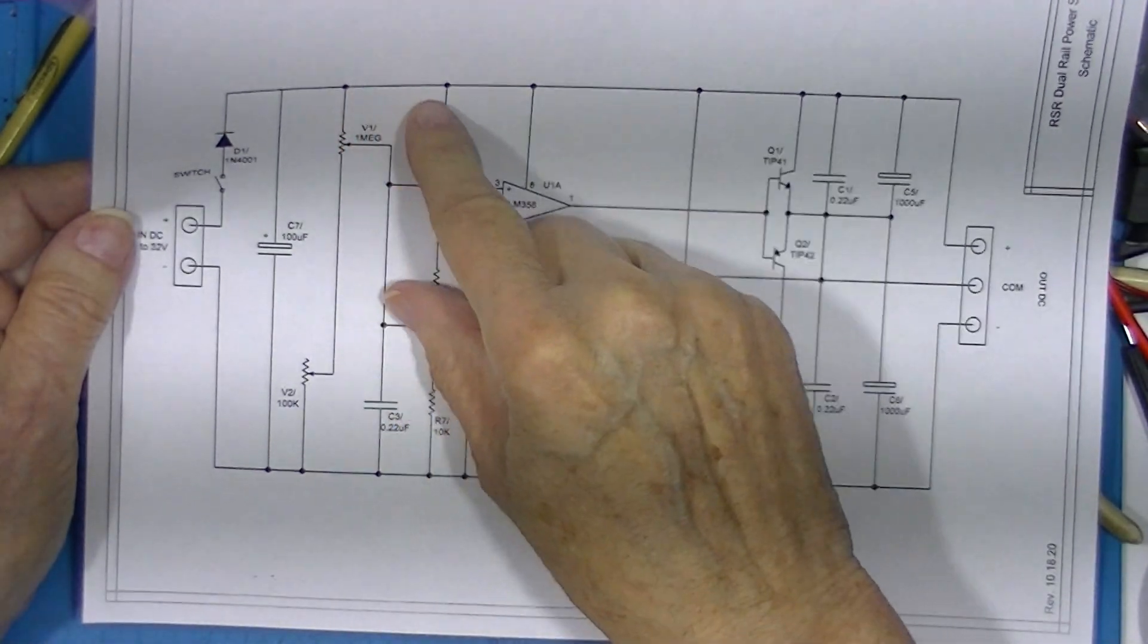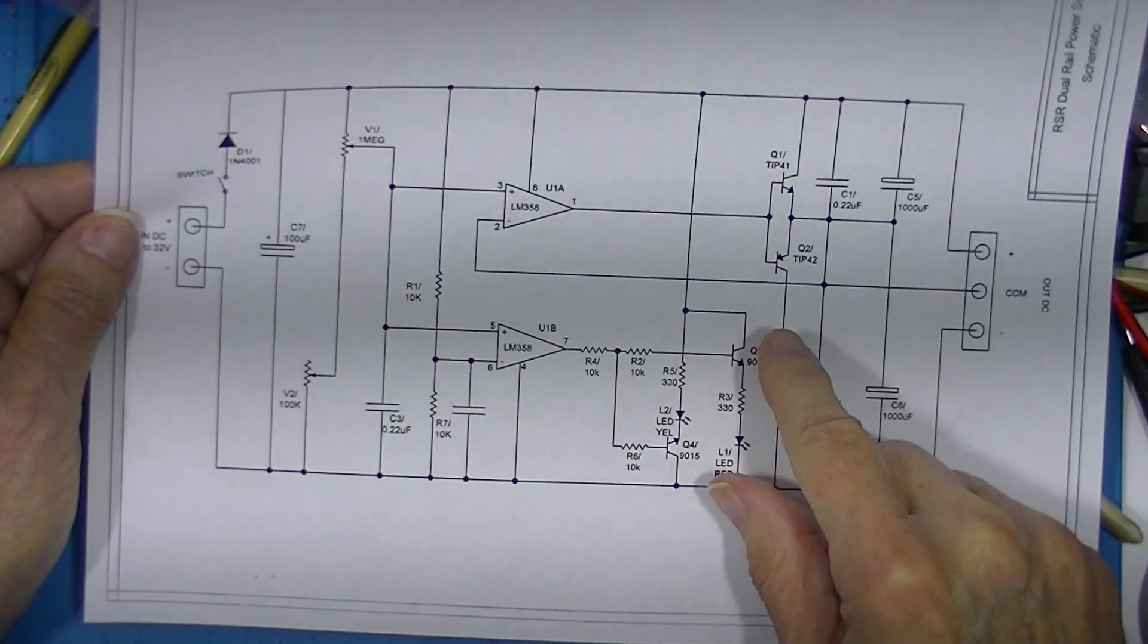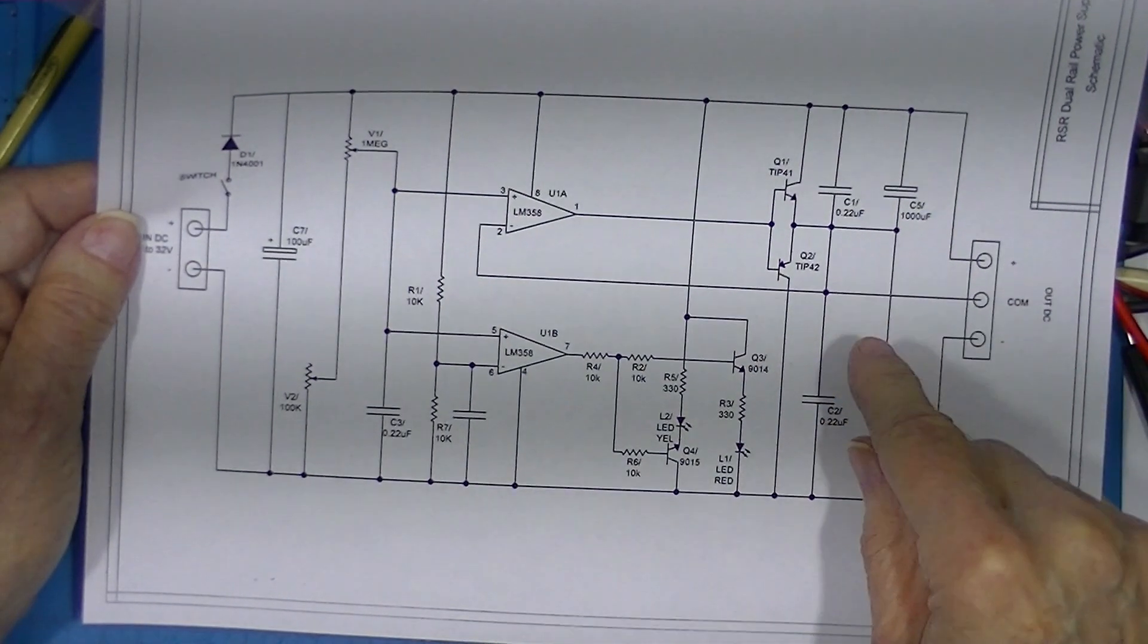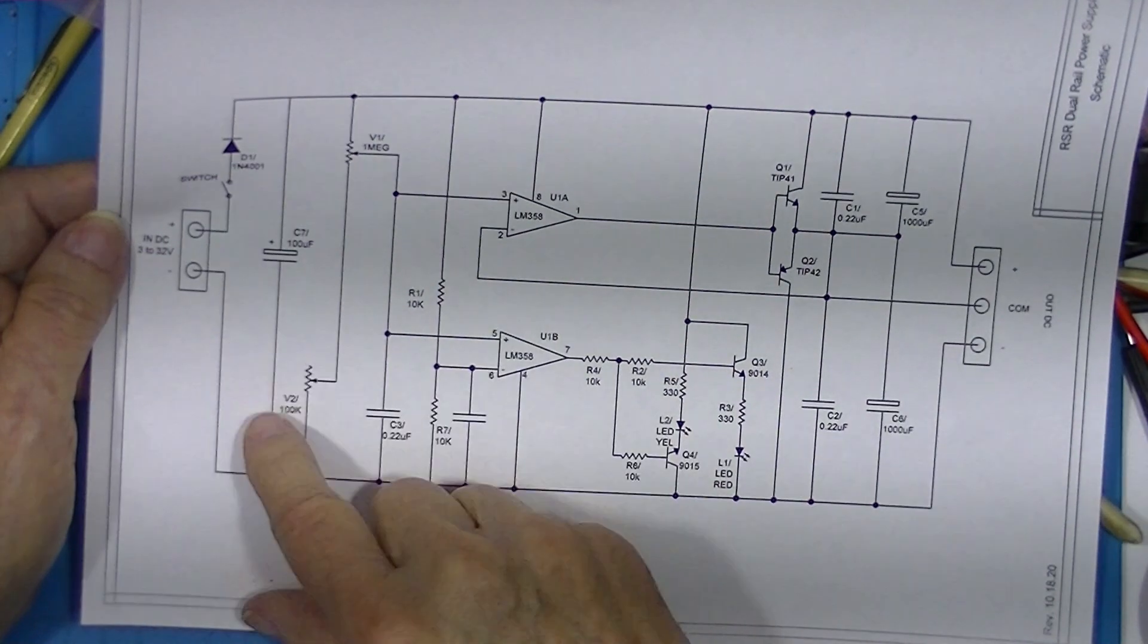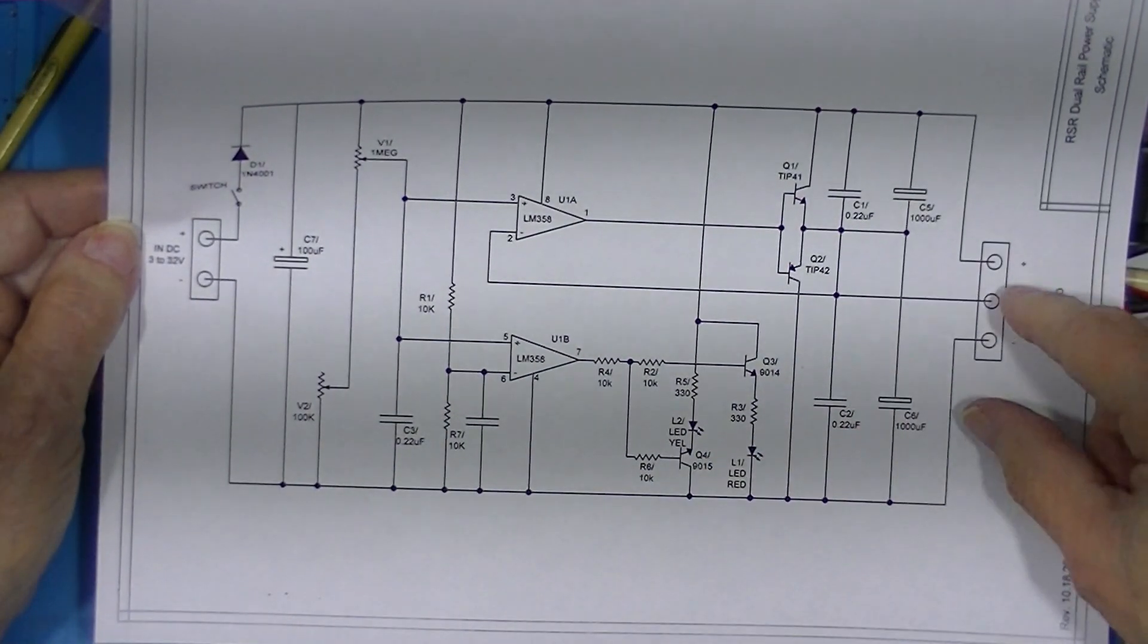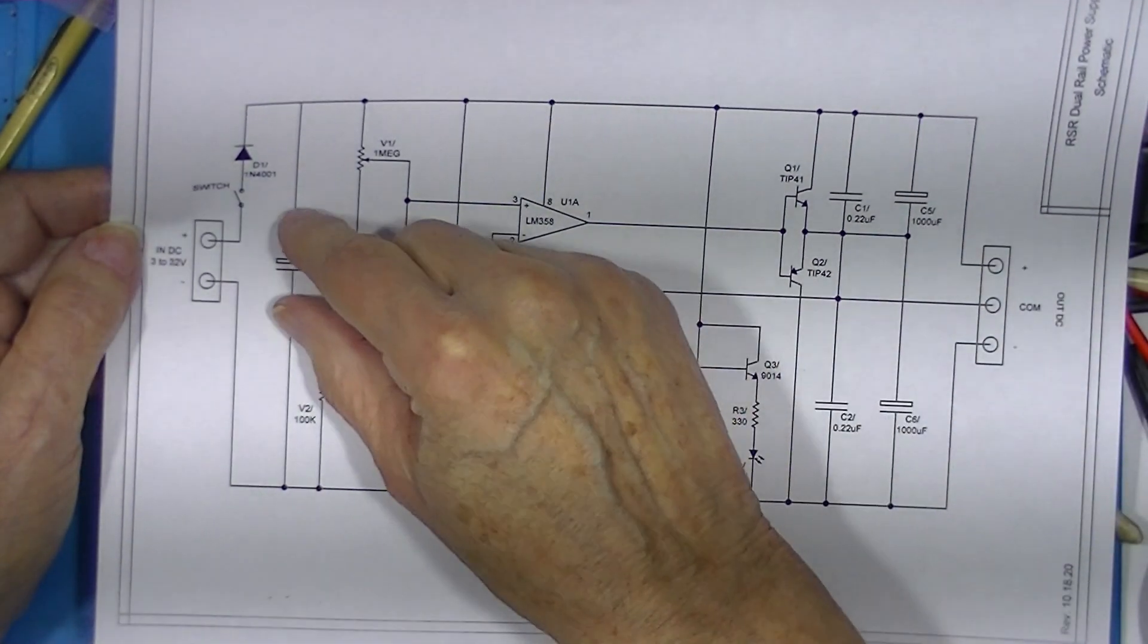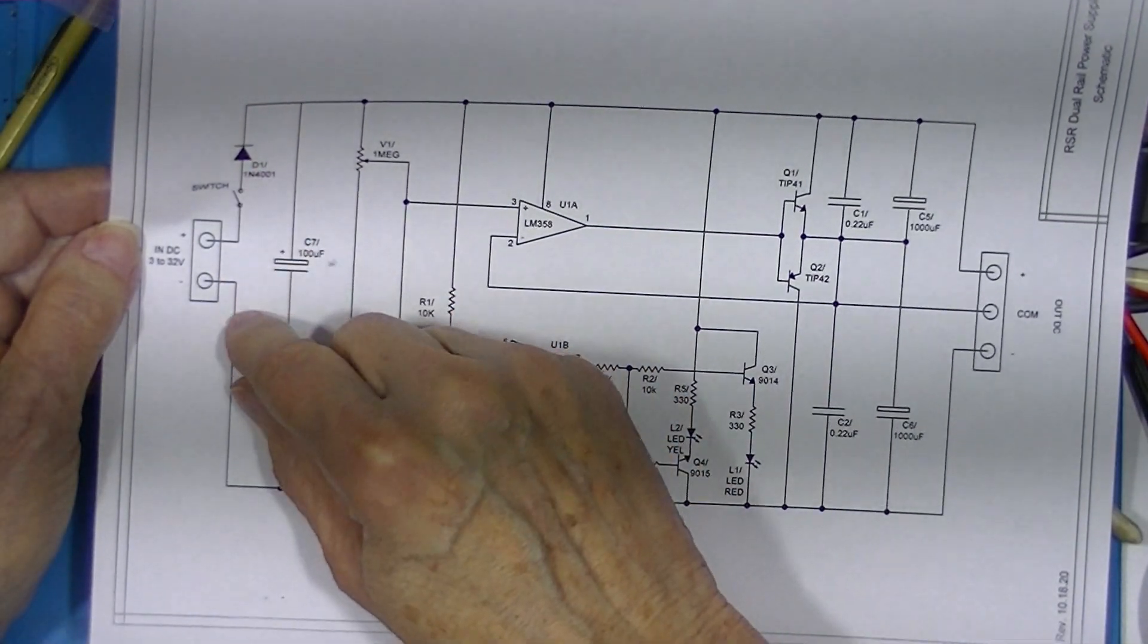This upper half of the circuit serves to adjust this to the midpoint of whatever supply voltage is. It does not adjust the output voltage. After all, the output voltage is equal to the input voltage less this little diode drop.